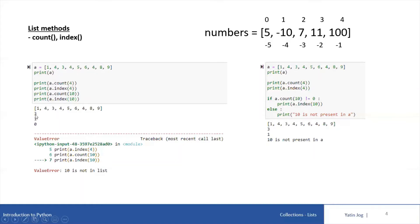Four is present three times, so the output is three. Similarly, we have the second list method: index. We invoke this method using the list variable as a.index(). The index method returns the index of the given value where it first appears in the list. Even if four is present multiple times, index returns the position of its first occurrence.